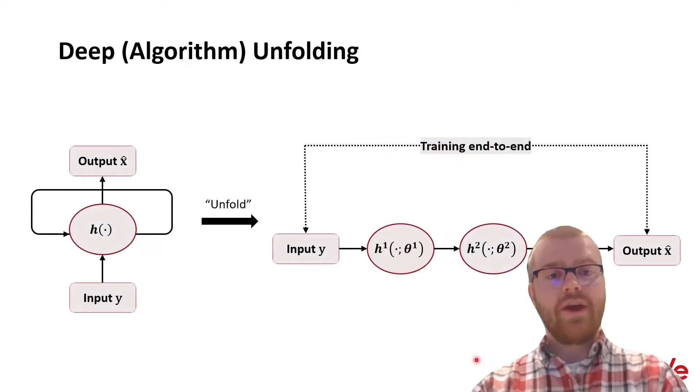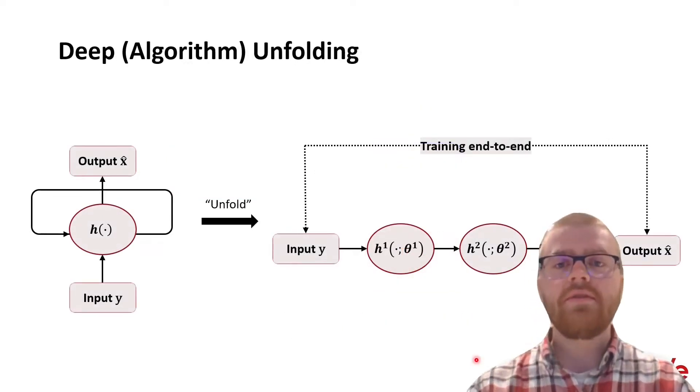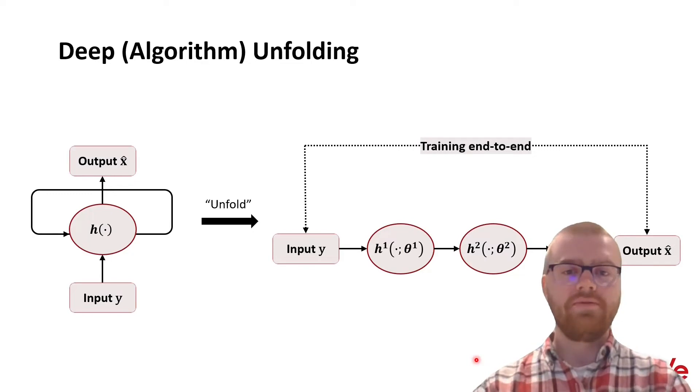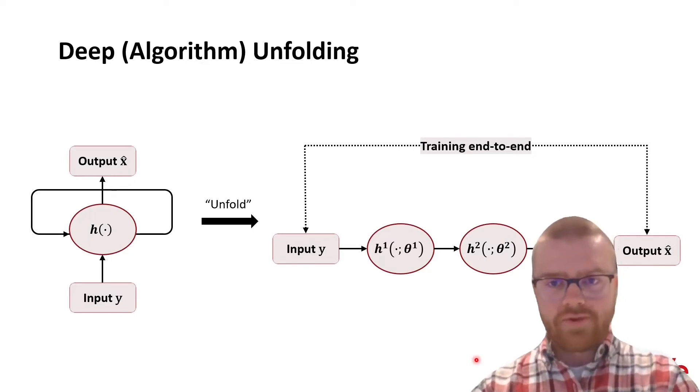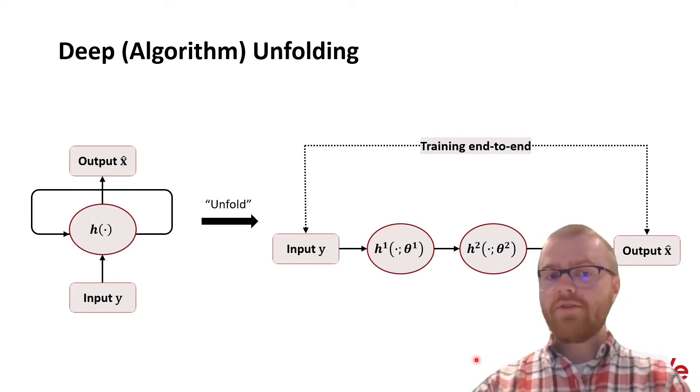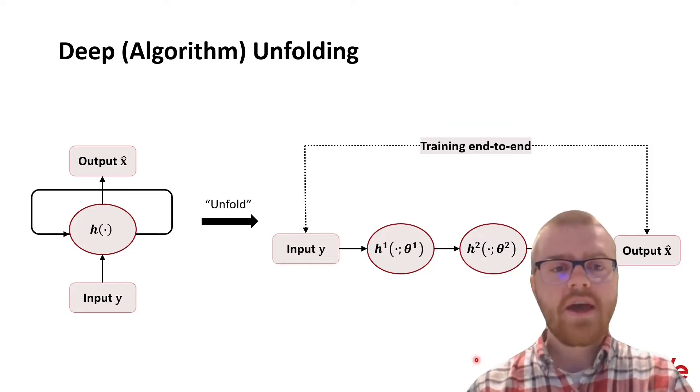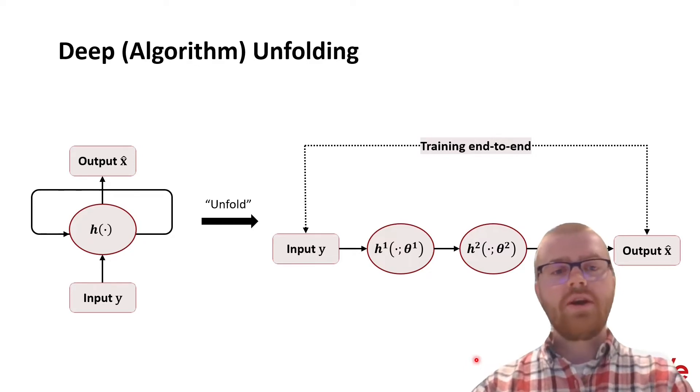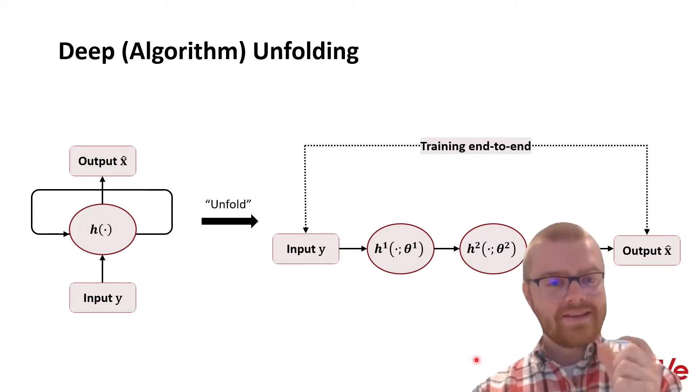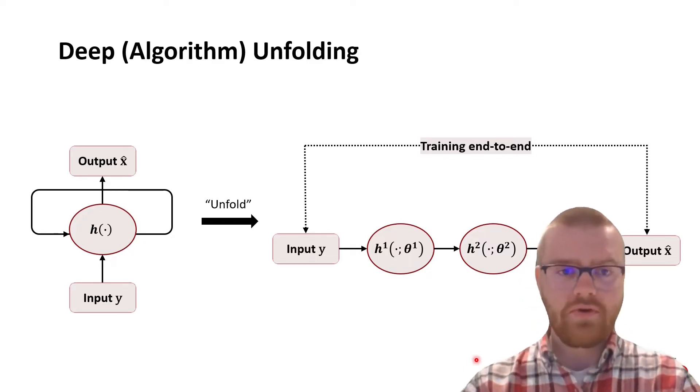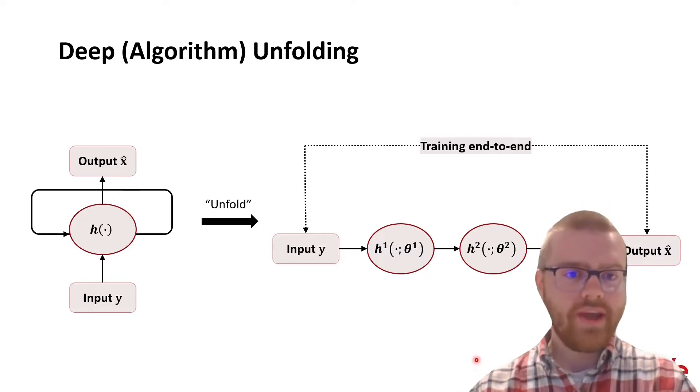Recently a popular way to deal with this is by going for deep algorithm unfolding. Here we unfold an iterative algorithm in way fewer steps, maybe three or five steps, and each fold of the algorithm we will make sure to replace some parts with deep learning or neural networks.